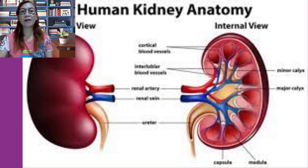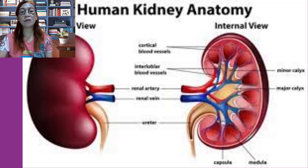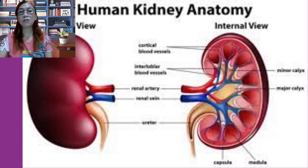The kidneys maintain the constancy of our internal fluids and are perfect examples of homeostatic organs. These small dark red organs with a kidney bean shape lie against the dorsal body wall in the retroperitoneal position, beneath the parietal peritoneum in the superior lumbar region, extending from the T12 to the L3 vertebra. They receive protection from the lower part of the ribcage. Because it is crowded by the liver, the right kidney is positioned slightly lower than the left. An adult kidney is about 12 cm or 5 inches long, 6 cm or about 2.5 inches wide, and 3 cm or 1 inch thick — about the size of a large bar of soap.